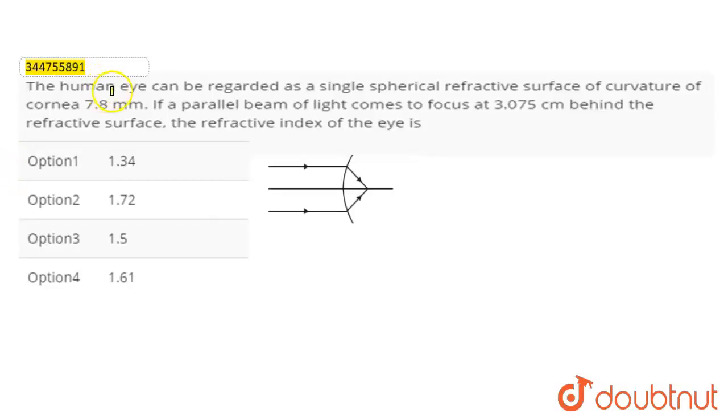Hello guys, we have to solve this problem: the human eye can be regarded as a single spherical refractive surface with curvature of cornea 7.8 mm. If a parallel beam of light comes to focus at 3.075 cm behind the refractive surface, what will be mu, the refractive index of the eye?